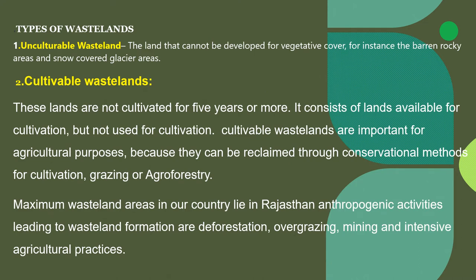There are two types of wastelands. The first is unculturable wastelands — lands which cannot and will never be developed into cultivable lands, because they are covered by snow or glaciers. The second is cultivable wastelands — lands that are cultivated but not in use for more than five years. These consist of lands available for cultivation but not used, because they can be reclaimed through conservation methods for cultivation, grazing, and agroforestry.